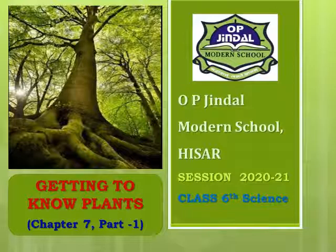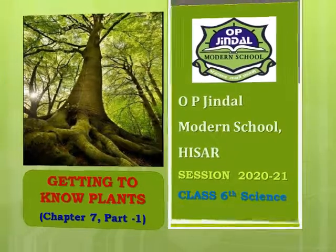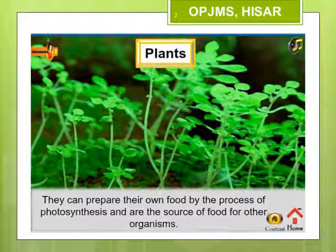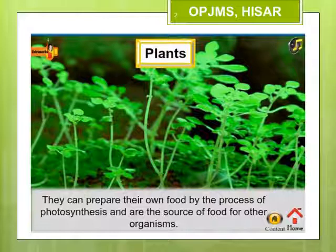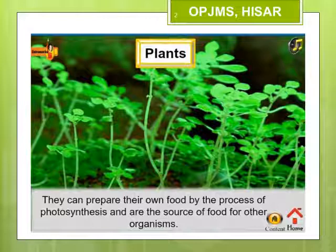Good morning everyone, today we are going to start with our chapter number 7: Getting to Know Plants. Plants are all around us and we depend on them for our survival. We see a wide variety of plants with different shapes and sizes, different colored flowers, different types of leaves. Some plants are small, some are big, some have weak stems and others have hard stems. In this chapter we will learn about different types of plants and their different parts such as roots, stem, leaves, flowers, etc.